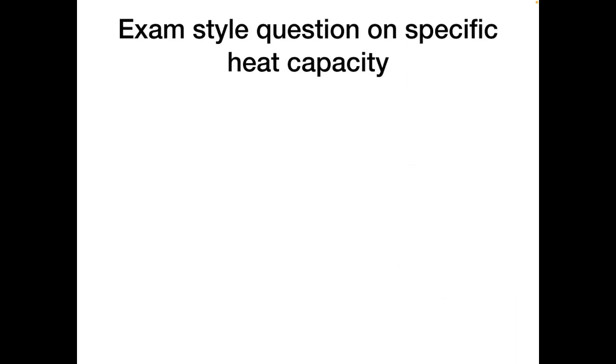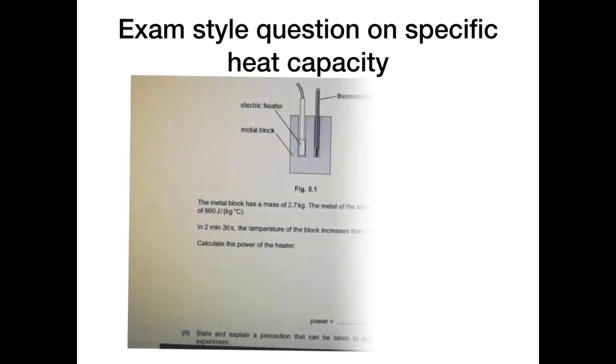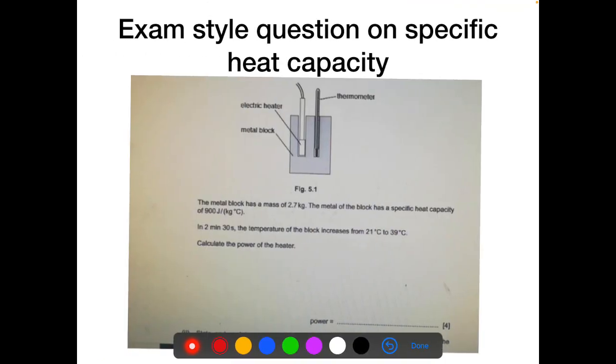Assalamu alaikum, my name is Abdul Rauf. Today we are going to discuss an exam style question based on specific heat capacity. The metal block has a mass of 2.7 kilograms. The metal of the block has a specific heat capacity of 900 joules per kilogram per centigrade. In 2 minutes and 30 seconds, the temperature of the block increases from 21 degrees Celsius to 39 degrees Celsius.